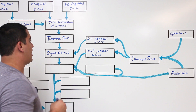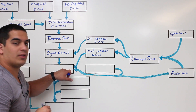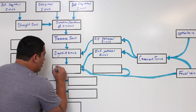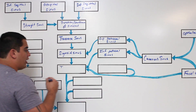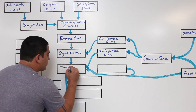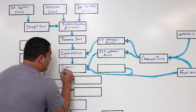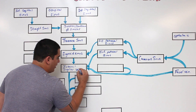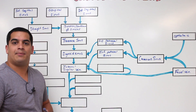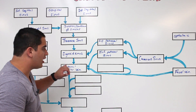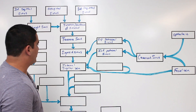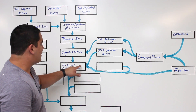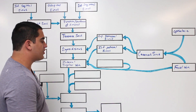The inferior petrosal sinus empties its blood into the internal jugular vein, which comes out through the jugular foramen. So far, the internal jugular vein has received blood from the sigmoid sinus — which collected from all the sinuses above — and also from the inferior petrosal sinus.